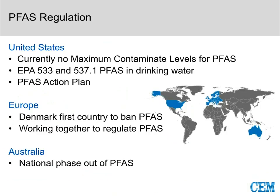Let's talk about where regulation currently stands. In the United States, we do not have any maximum contaminant levels for most PFAS. There is a health advisory for PFOA and PFOS at 70 PPT, but that's even starting to decrease — detected at very, very low limits. There are two EPA methods: EPA 533 and EPA 537.1. Both are for drinking water, using SPE cleanup followed by LC-MS/MS analysis. In this talk, I'm going to focus on samples outside the drinking water sector — soil and food.